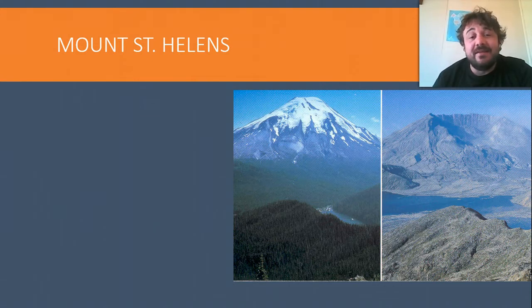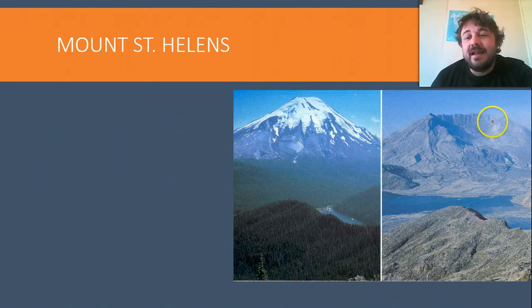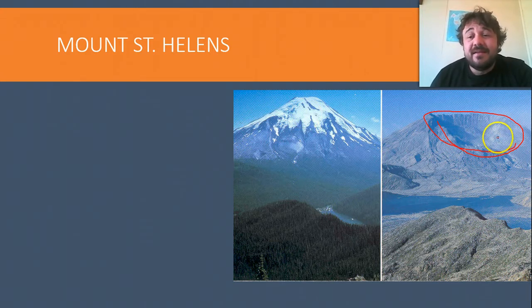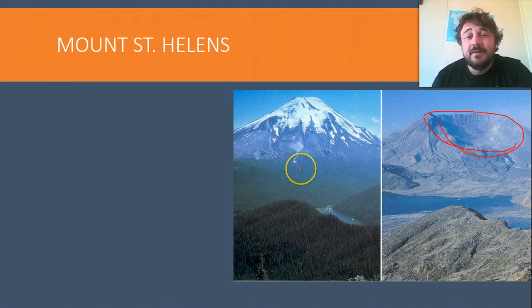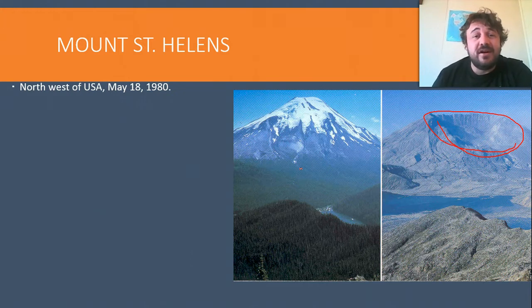Let's look at Mount St. Helens. You're all familiar with a before and after weight loss photo - this is a phenomenal one. Here's a before photo, and here's something that has lost millions of tons of weight. This was taken around May 1st or 2nd; the other photo is the day after the massive eruption. In the northwest of the USA, on May 18th, 1980, is what we're going to focus on.